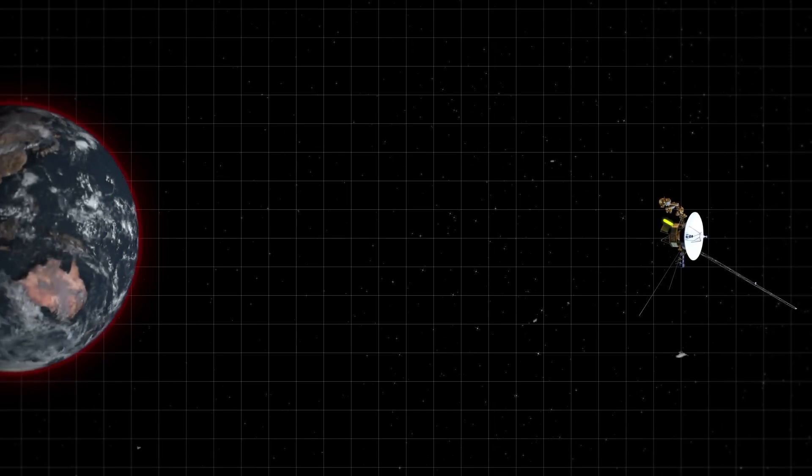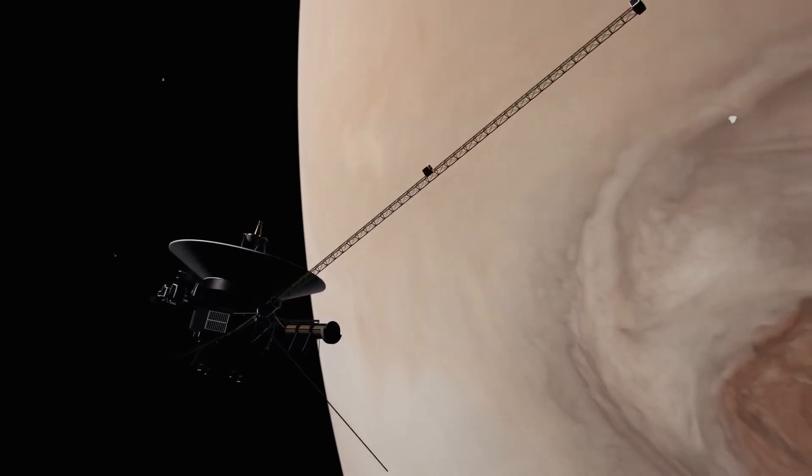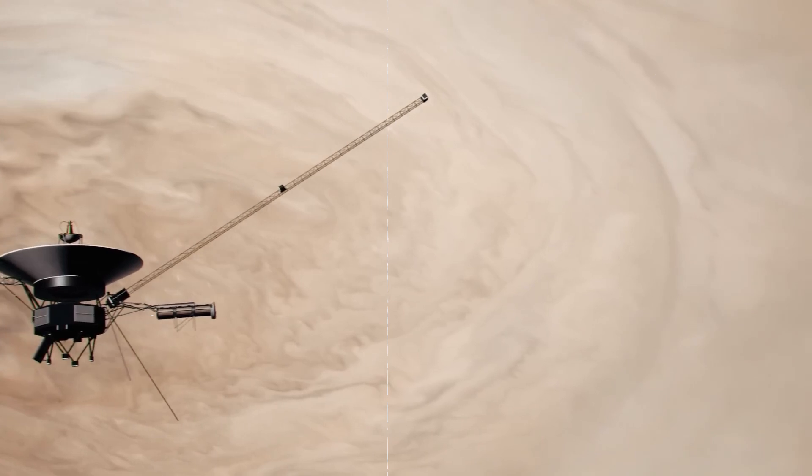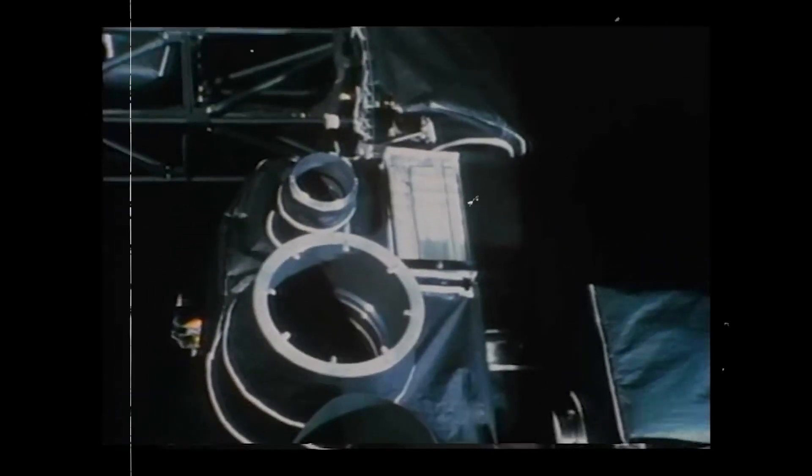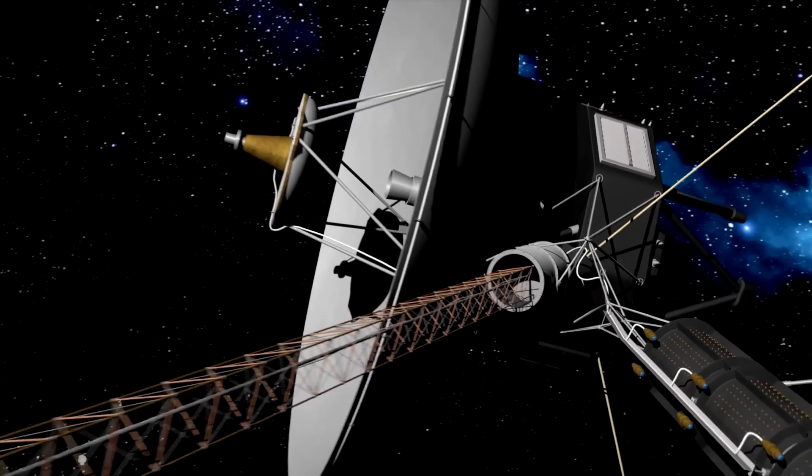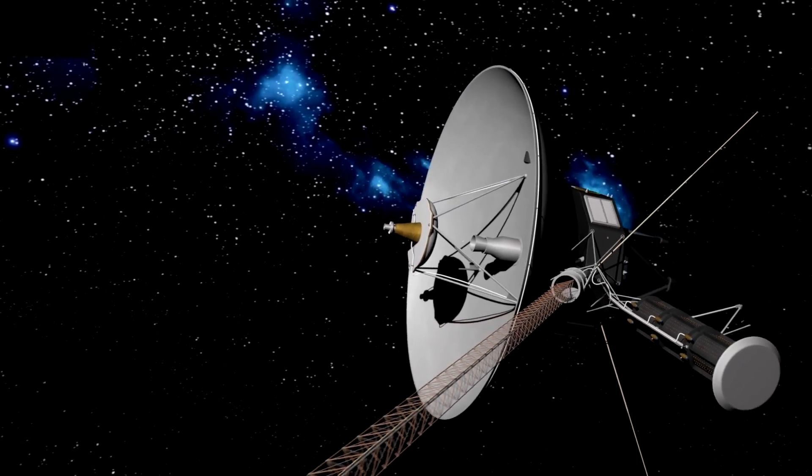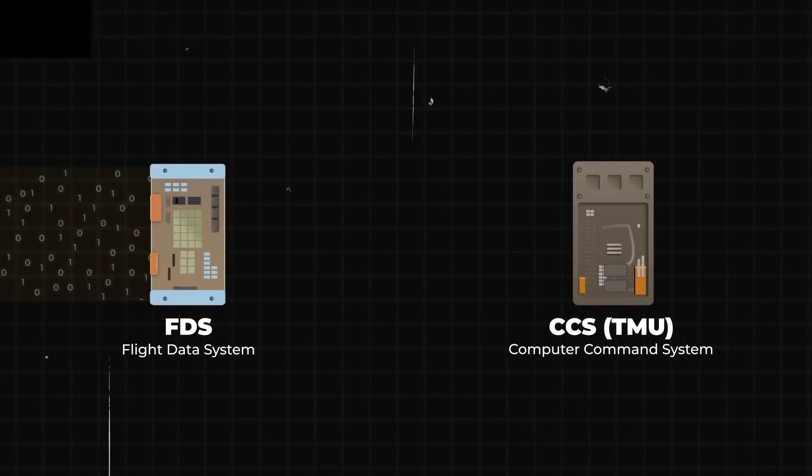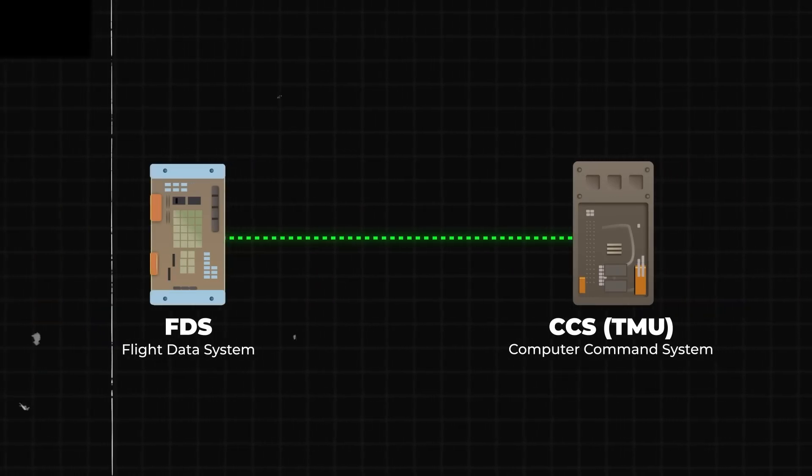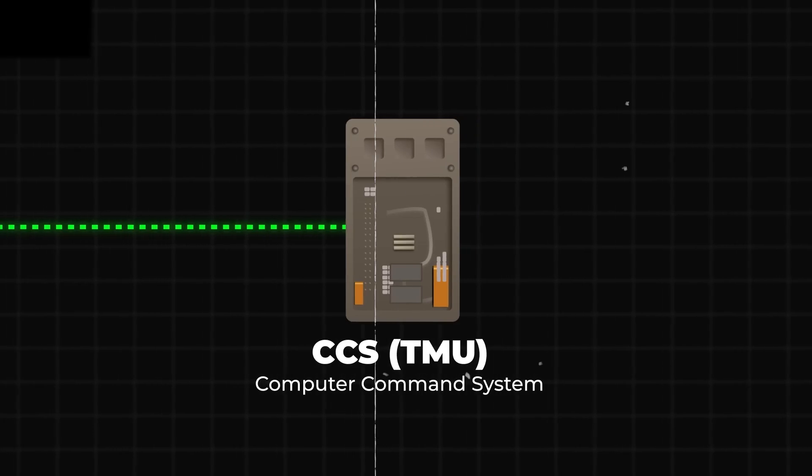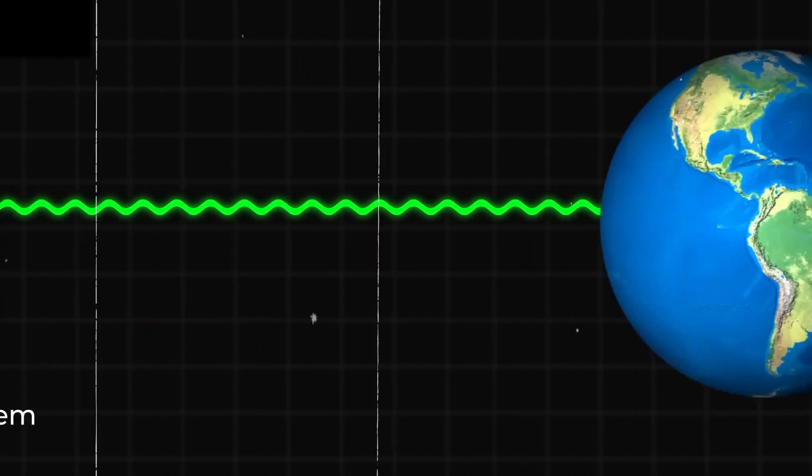The FDS collects binary formatted data from both scientific instruments and internal spacecraft diagnostics. After processing this data, the FDS merges it into a single package. This package is then sent to the computer command system, which houses the telemetry modulation unit. The TMU then transmits this package back to Earth.